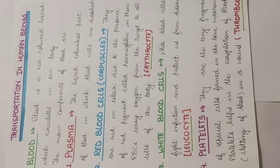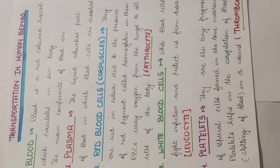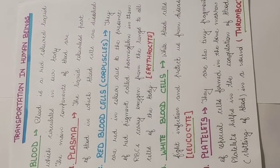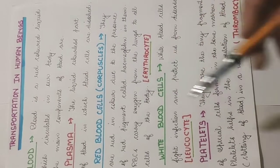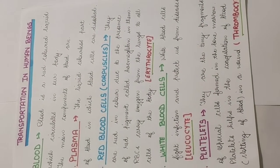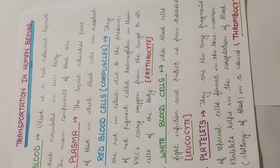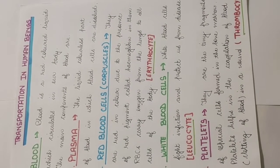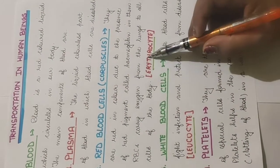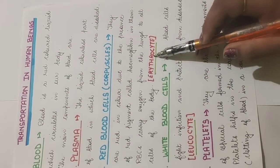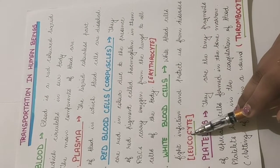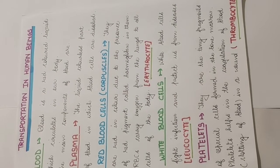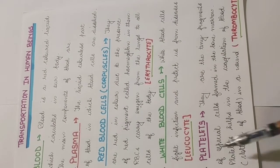Plasma is the fluid in which blood cells are dissolved, keeping blood in liquid form. RBCs are the red-colored cells in the blood containing a red pigment called hemoglobin, which combines with and carries oxygen in the blood. RBCs are also called erythrocytes. WBCs are also called leukocytes — they fight infections using antibodies present in them.